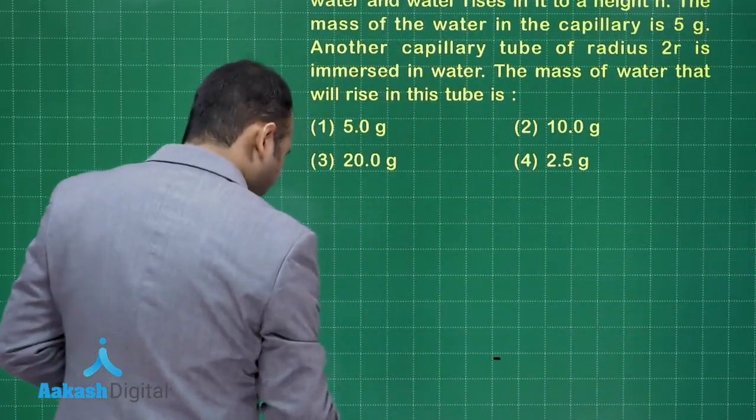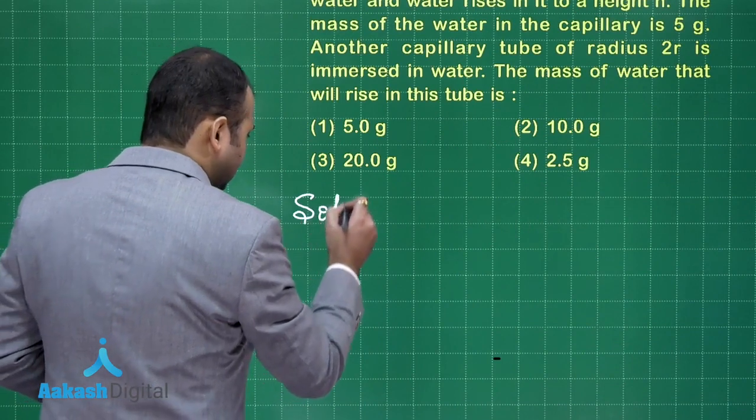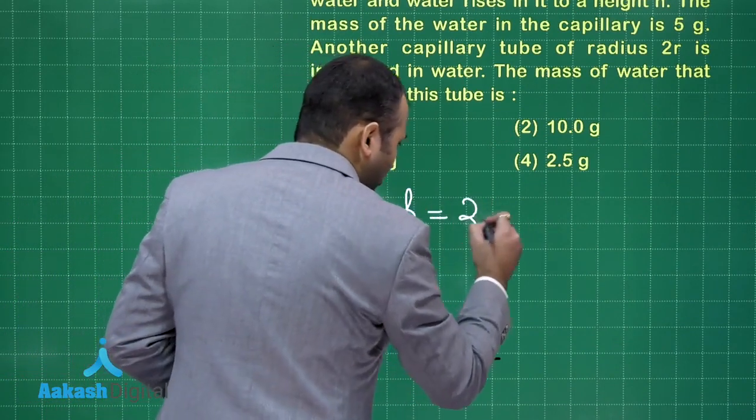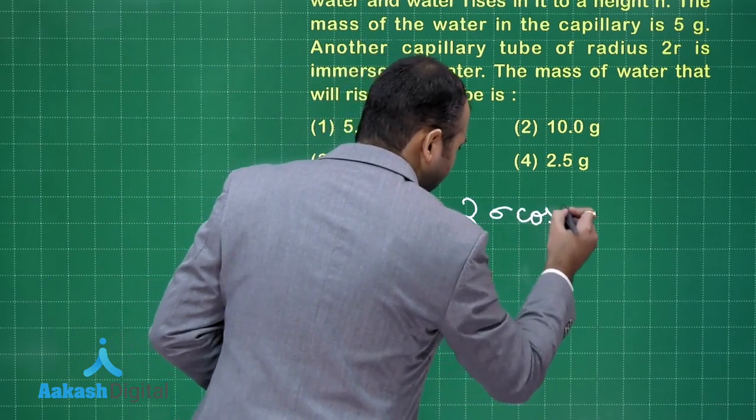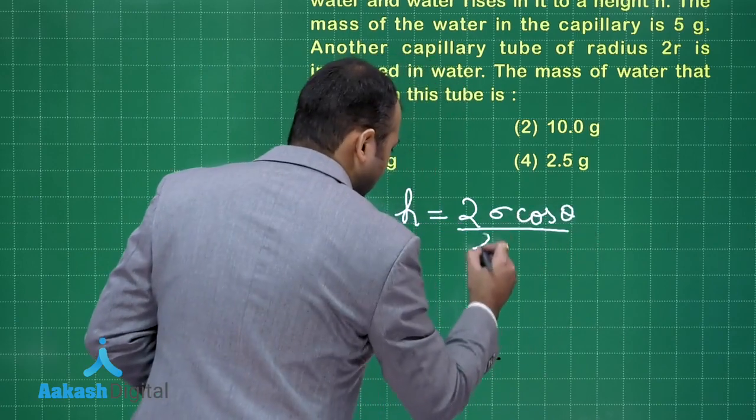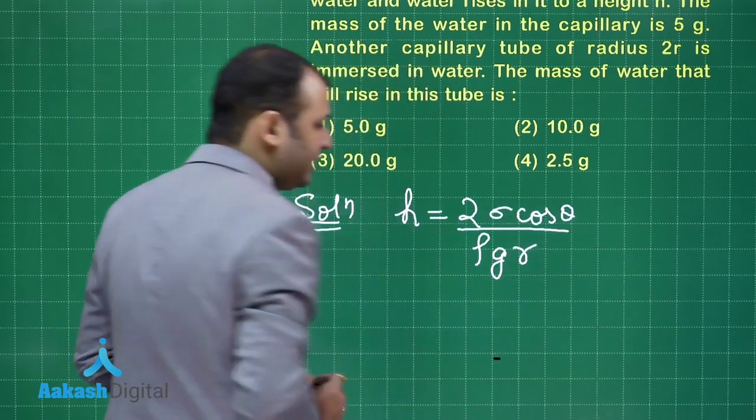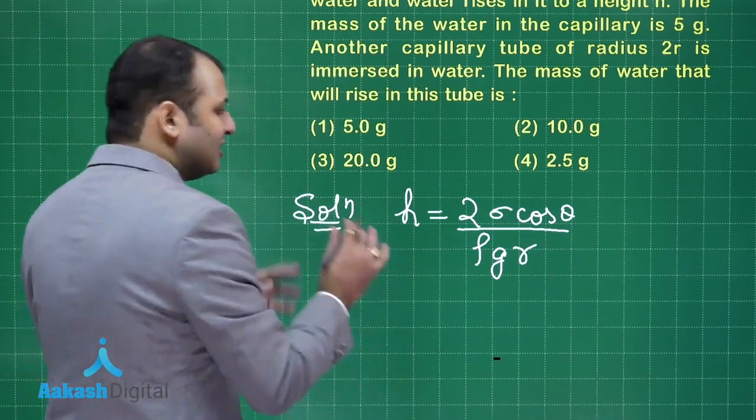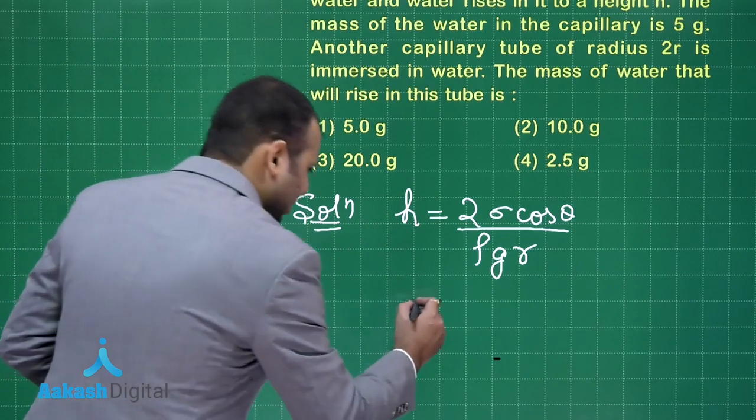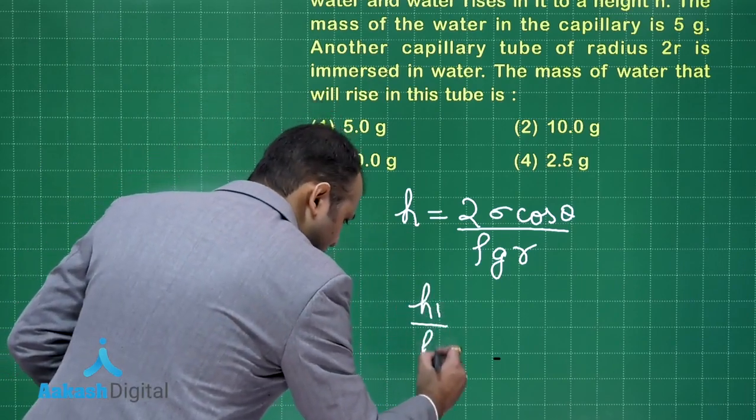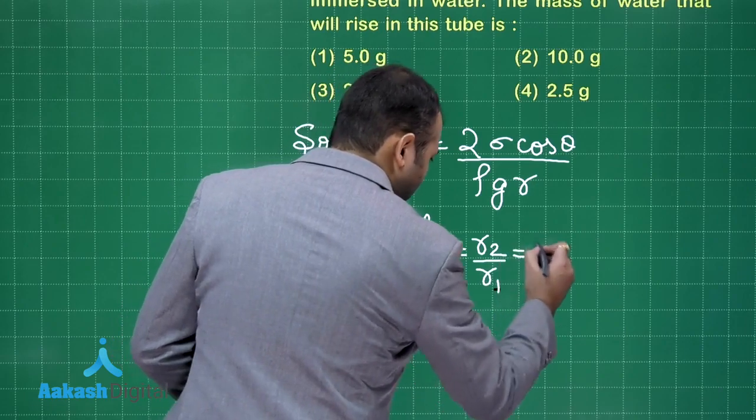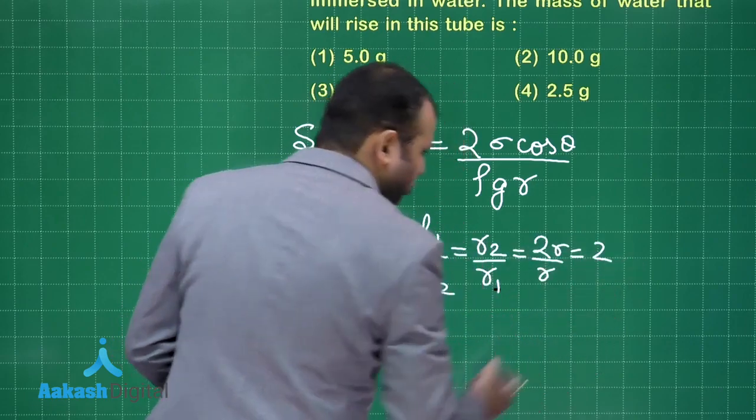First of all, we need to understand what is the formula for capillarity. Height is 2 sigma cos theta. Sigma would be surface tension rho g r. So h is inversely proportional to r for the same substance and same glass and water. It can be written as h1 upon h2 would be equal to r2 by r1, that is equals to 2r by r, that is equals to 2.